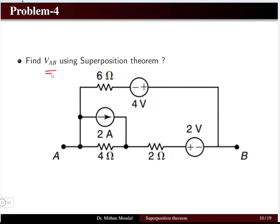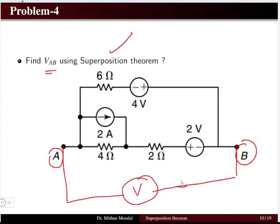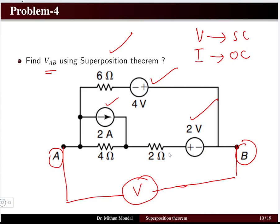Problem 4: determine the potential VAB using superposition theorem. A and B are two terminals and we have to find the voltage across them. The circuit has a 4 volt voltage source, a 2 volt voltage source, and a 2 ampere current source — all independent. We take one source active at a time, replacing voltage sources with short circuits and current sources with open circuits. With three sources we need to find VAB for three cases and add them.